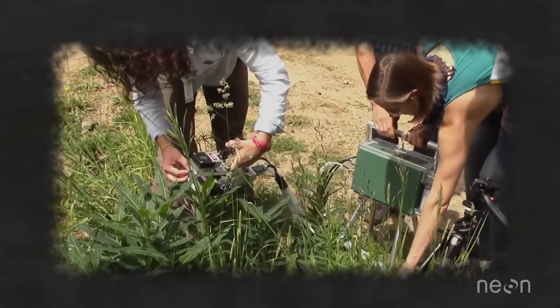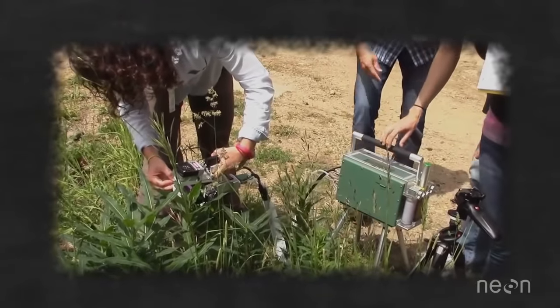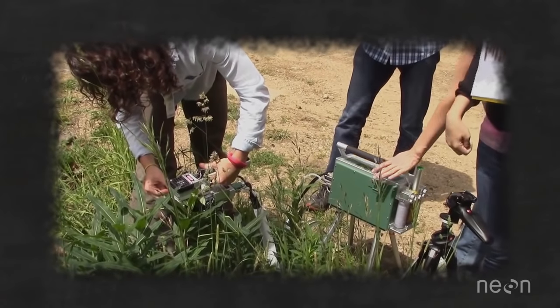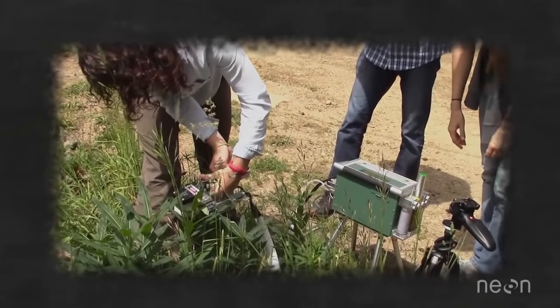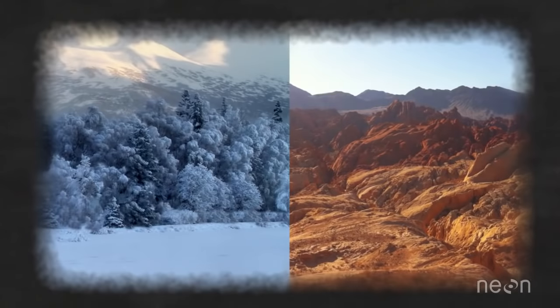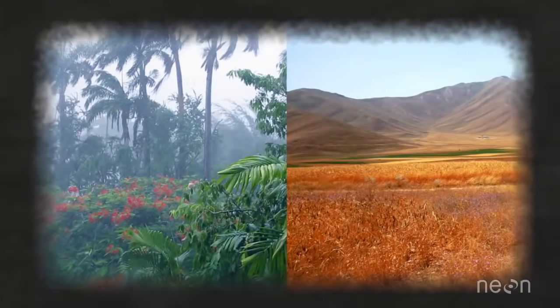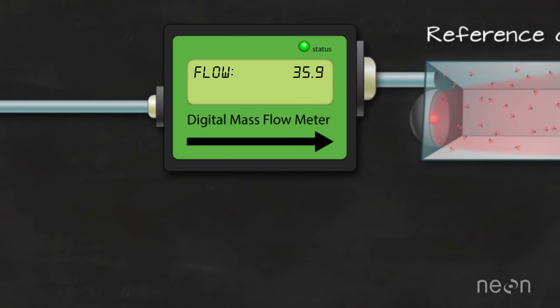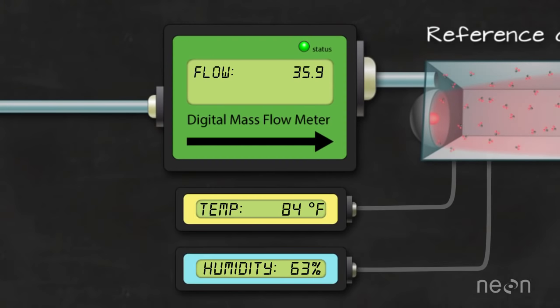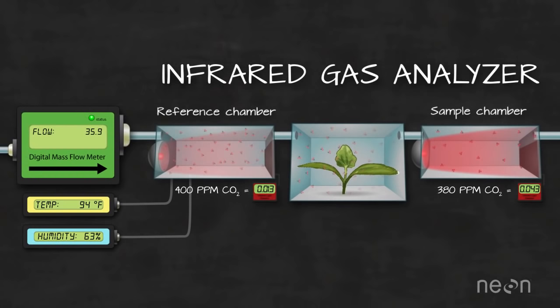So the infrared gas analyzer can be used to estimate how much photosynthesis is occurring. But if that's not powerful enough, it can also be used to measure how temperature and moisture changes in our climate impact carbon uptake. We can also add additional meters to the setup that control things like temperature and humidity in the chamber. So we can adjust the temperature of the chamber and measure how that affects CO2 uptake of our plant.